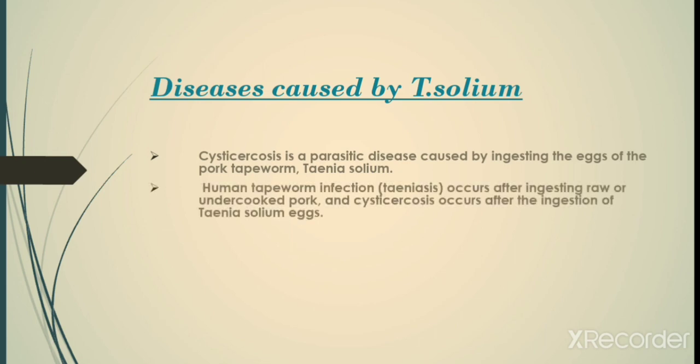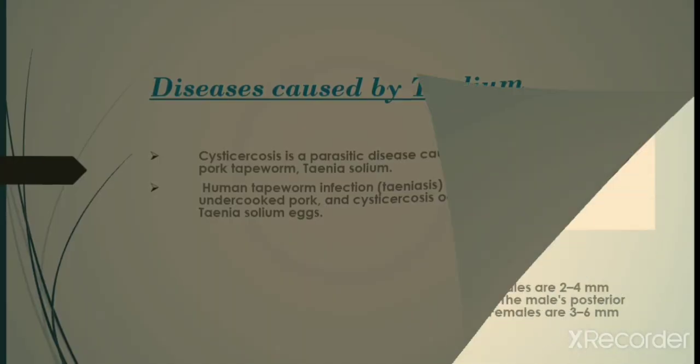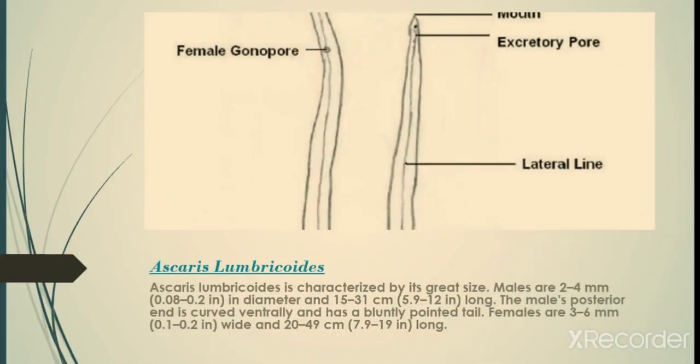The diseases caused by Taenia solium: cysticercosis is a parasitic disease caused by ingesting the eggs of the pork tapeworm Taenia solium. Human tapeworm infection — taeniasis — occurs after ingesting raw or undercooked pork. Cysticercosis can also result from this infection.